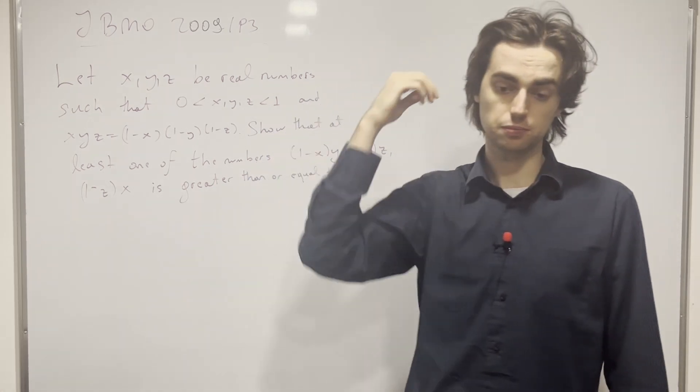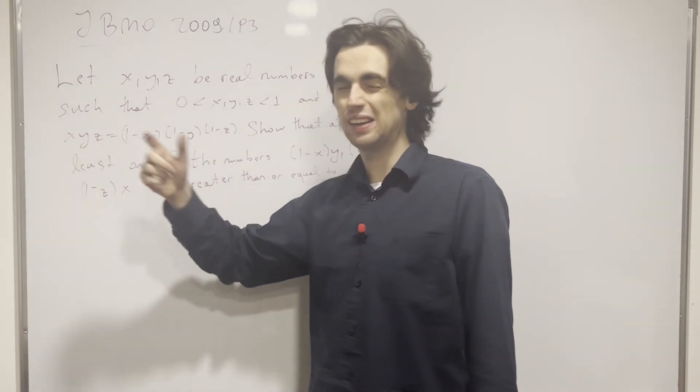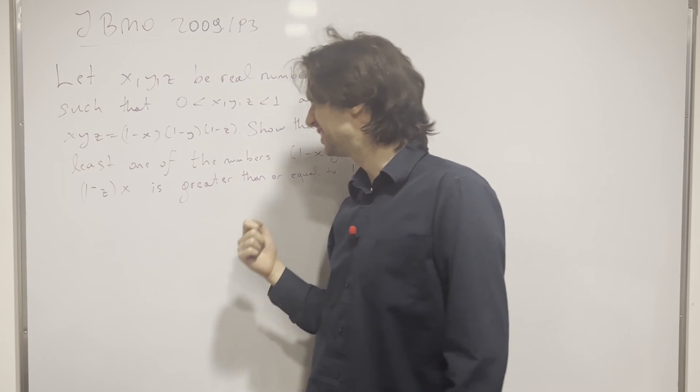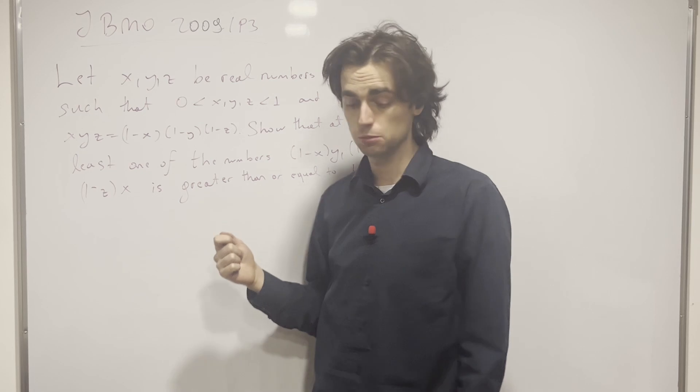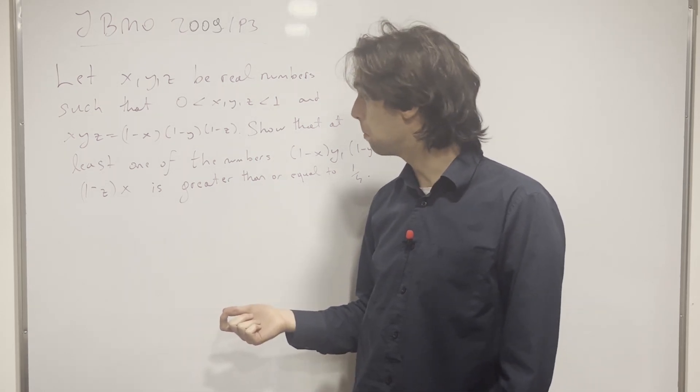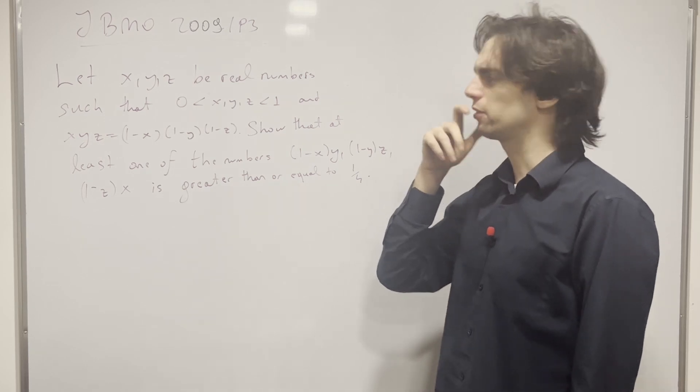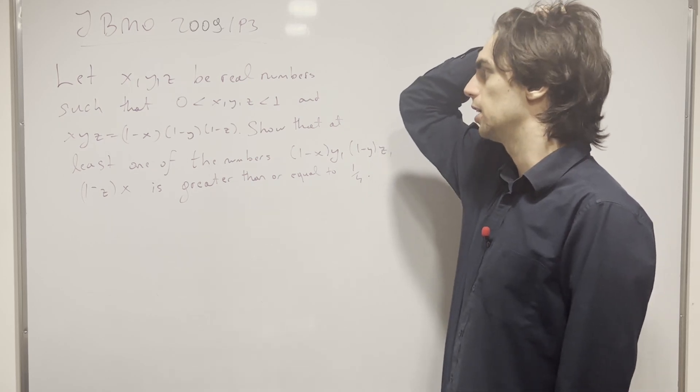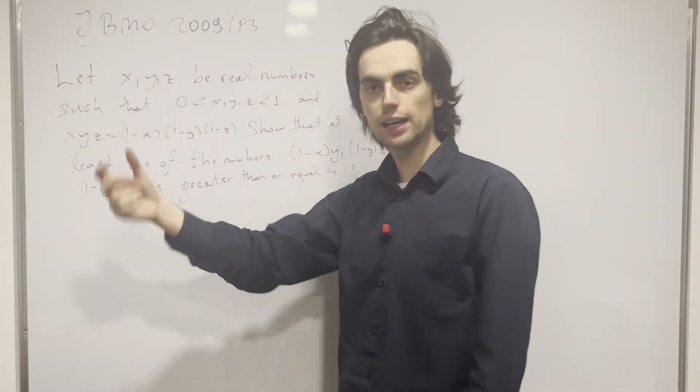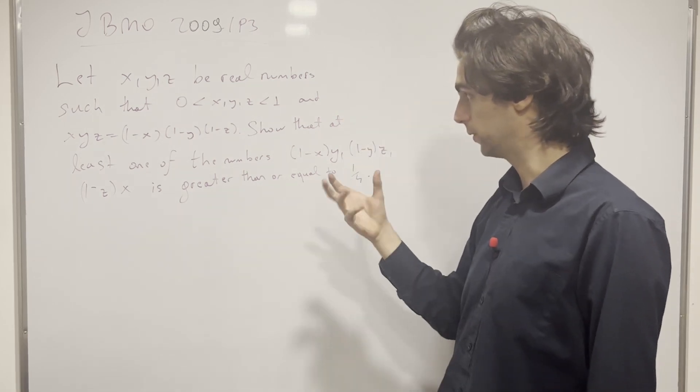And then if say y is 1 over 5, then you have 1 minus y is 4 over 5. And then you have z over 20 needs to be equal to 4 over 5 times 3 over 4, which is 3 over 5z, which actually may or may not be possible. I don't know, I'm just doing this in my head. But the point is, this doesn't seem to be easy. It seems to be that if you take x and y to be small, then 1 minus x and 1 minus y are big. And then z is also going to be big-ish.